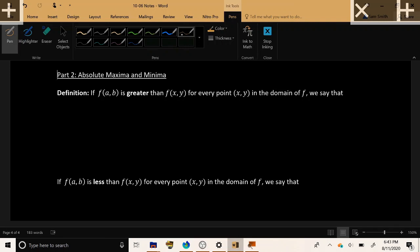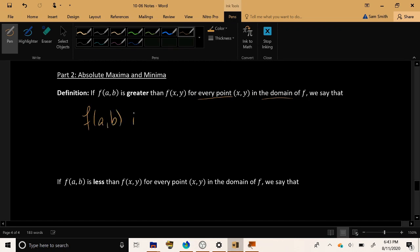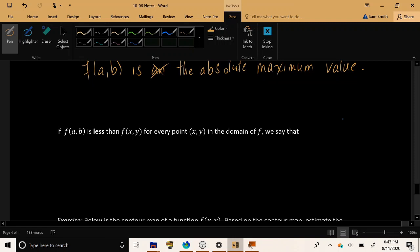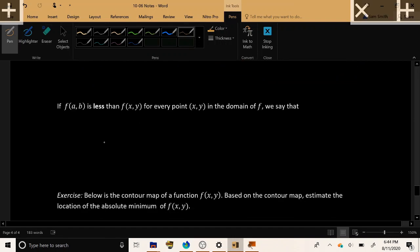So if f(a,b) is larger than f(x,y) for every point in the domain, we say that f(a,b) is the absolute maximum value. And if that output happens to be smaller than every other point, then we get the corresponding absolute minimum value.